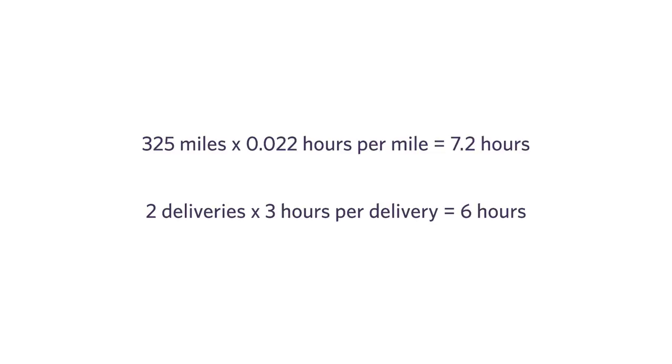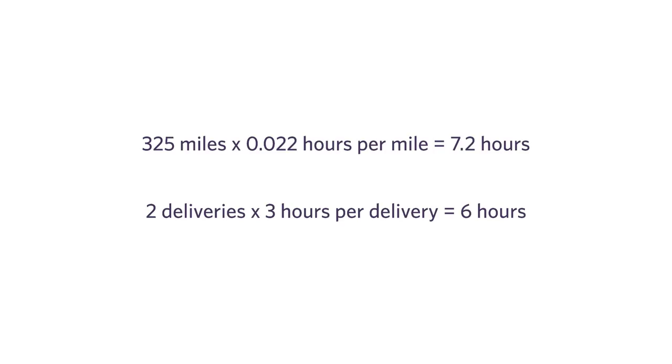Our knee-jerk reaction was to just average those two numbers together and get an estimate for how many hours it's going to take. But here's the problem: deliveries and miles are going to be related. On average, the further he travels, the more opportunities he has to deliver stuff, so I would expect him to be doing more deliveries. For shorter trips, I would expect fewer deliveries. Because these two things are related, if I calculate 7.2 hours based on miles and 6 hours based on deliveries and then combine them, I end up double counting.